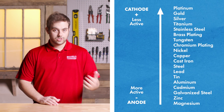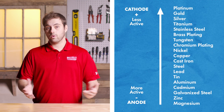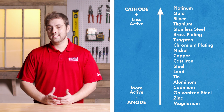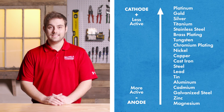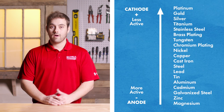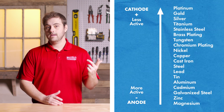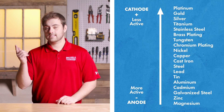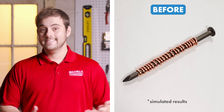When an electrolyte, such as salt water, is present, and two or more of these dissimilar metals come into electrical contact, the more active metal acts as an anode and the less active metal acts as a cathode.